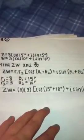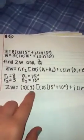ZW is going to be equaling to both of the R's, which is 8 times 3, plus both of the thetas plugged into the equation. So it's going to be cos 15 plus 10 plus I sine 15 plus 10.